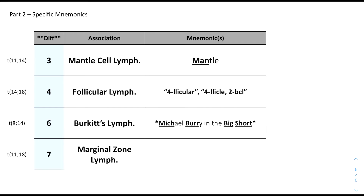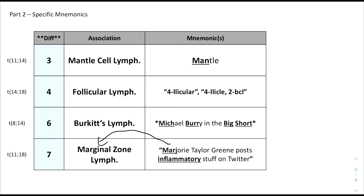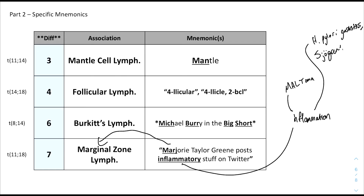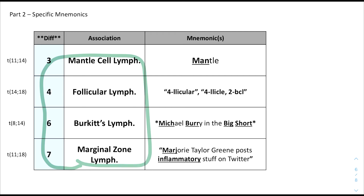For marginal zone lymphoma, think of the Georgia politician Marjorie Taylor Greene, who posts very inflammatory stuff on Twitter. 'Marjorie' for marginal, and 'inflammatory' because this is associated with inflammation — a MALToma. The three main inflammatory associations per Pathoma are H. pylori gastritis, Sjogren's with salivary gland inflammation, and Hashimoto's thyroiditis. Notably, marginal zone lymphoma may regress if you treat the underlying condition — particularly the gastric MALToma form may regress with H. pylori treatment.